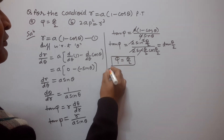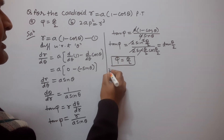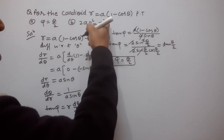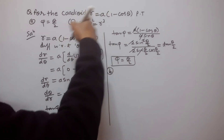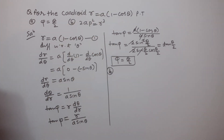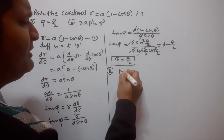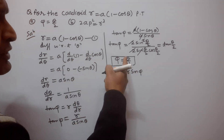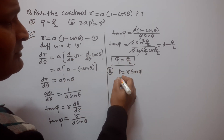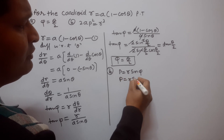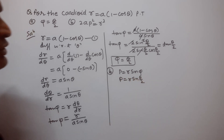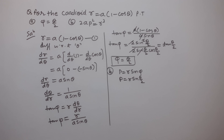Now for the second proof, we find the pedal equation, which is the relation between r and p. We know that p is equal to r·sin φ. Now we substitute φ equal to θ/2, so we get p equal to r·sin(θ/2).